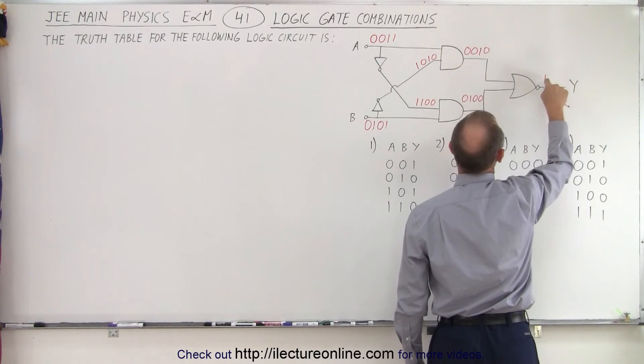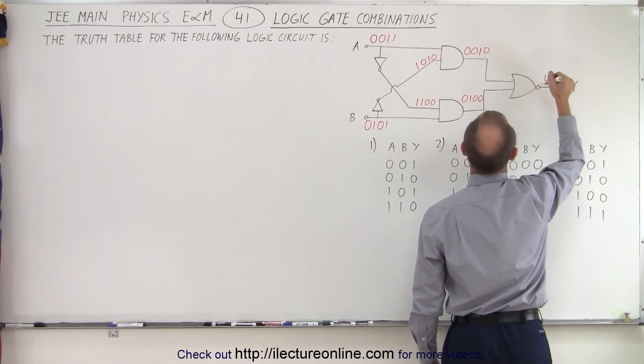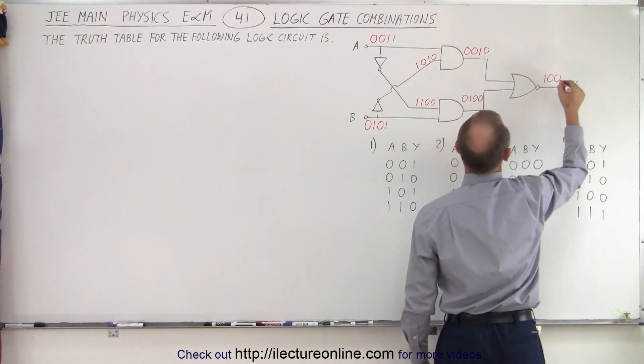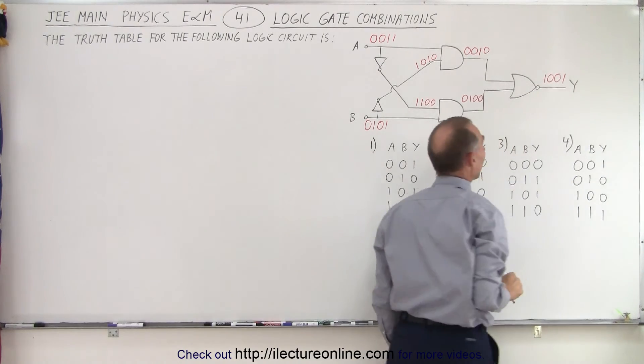A 0 and a 1 would give us a 1, but since it's a NOR gate it will give us a 0. A 1 and a 0 will give us a 0, and a 0 and a 0 will give us a 1. So that's the final output at the Y.